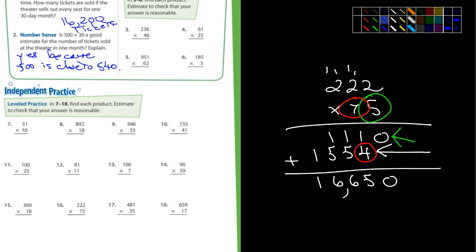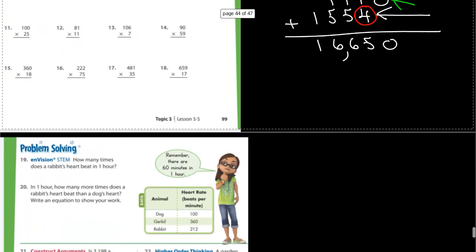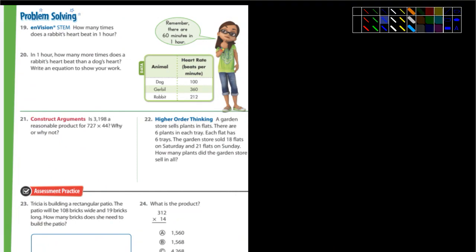All right. Let's look at the problem solving. Number one, how many times does a rabbit's heart beat in an hour? Well, there's the beats per minute. Okay, how many minutes are in an hour? And it says it right there. You guys can do that one. Number 20, in an hour, how many more times does a rabbit's heart beat than a dog's heart beat? So you're going to compare.